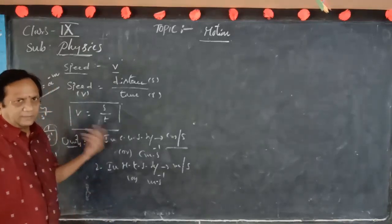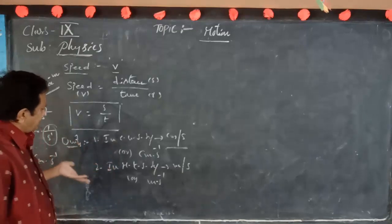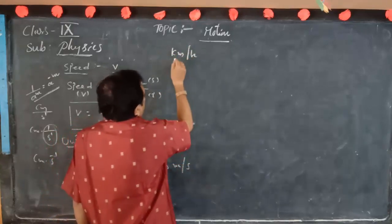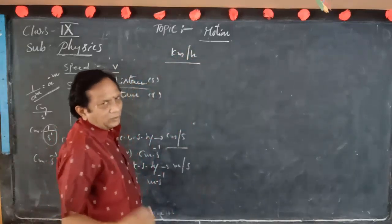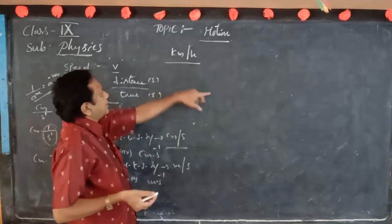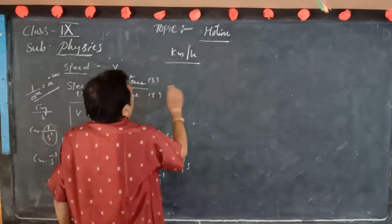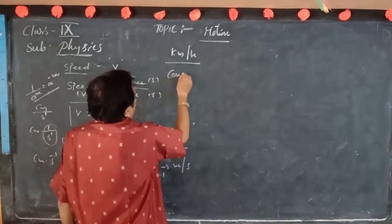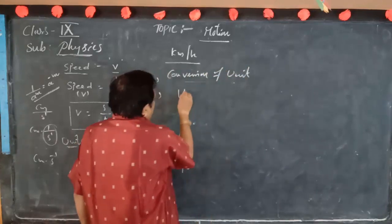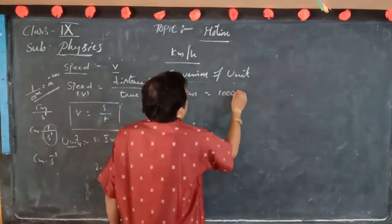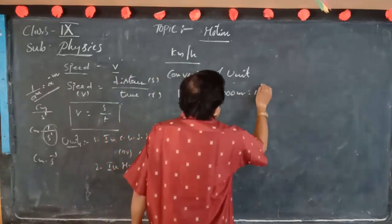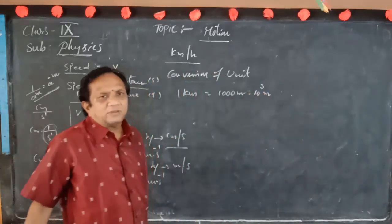Now I will explain the conversion of units — converting kilometres per hour into metres per second. One kilometre is equal to 1000 metres, or 10 cubed metres. And one hour is equal to 60 into 60 seconds, that is 3600 seconds.